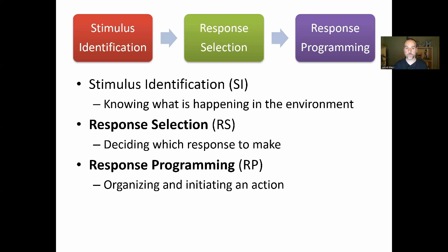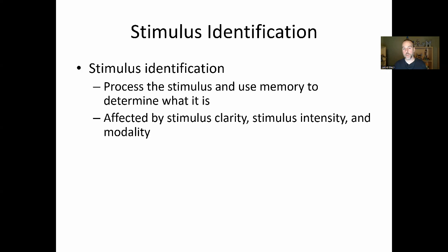For stimulus identification we'll cover it in this module and revisit it a bit in the vision section. The key point is: we process the stimulus and use memory to determine what it is. When we see something we've probably seen it or something like it before, so we're always connecting with memory to help identify what we see. Stimulus identification is affected by stimulus clarity, stimulus intensity, and modality.